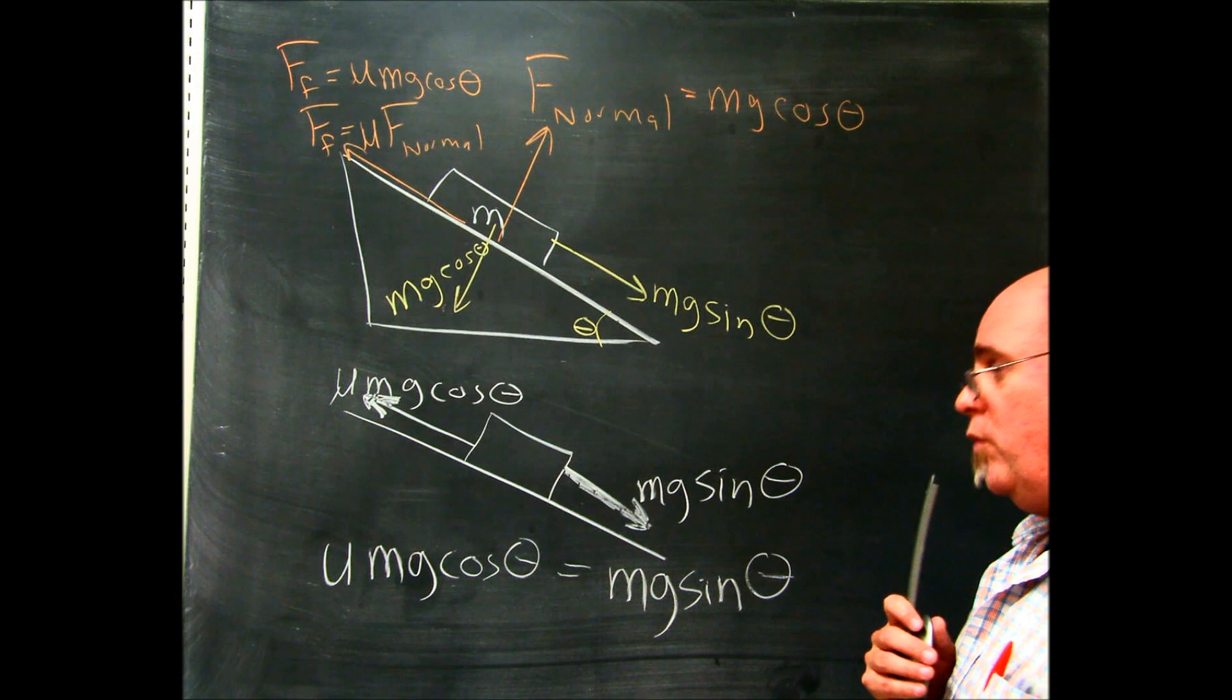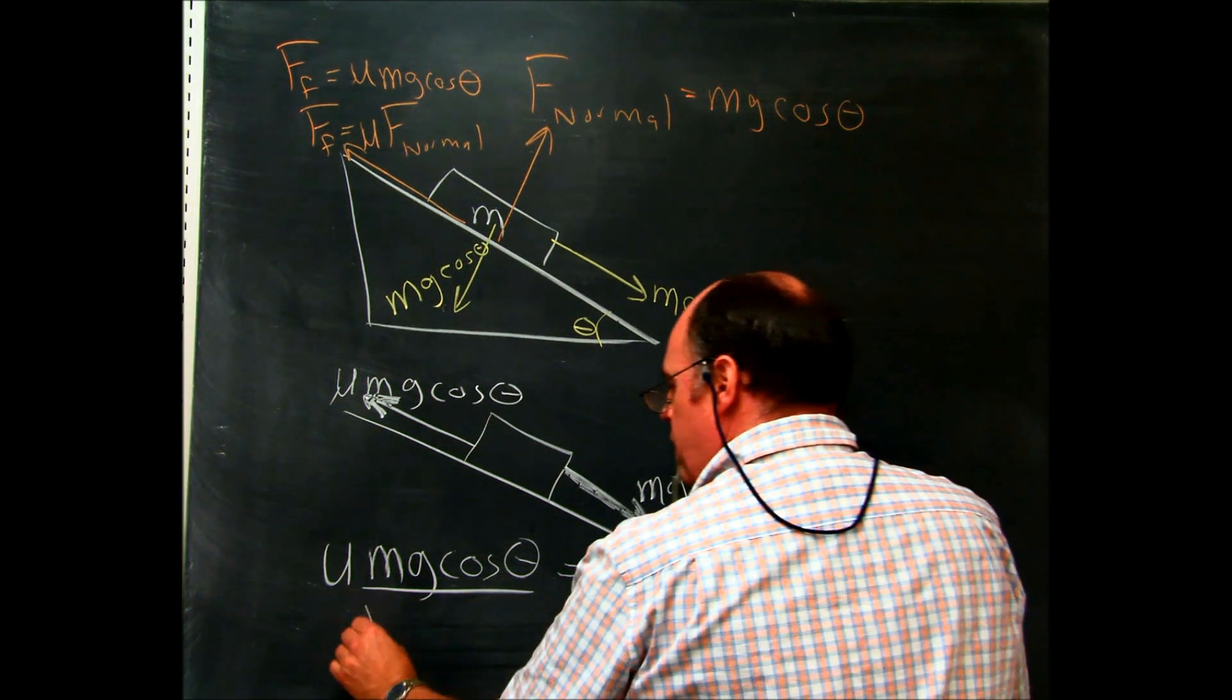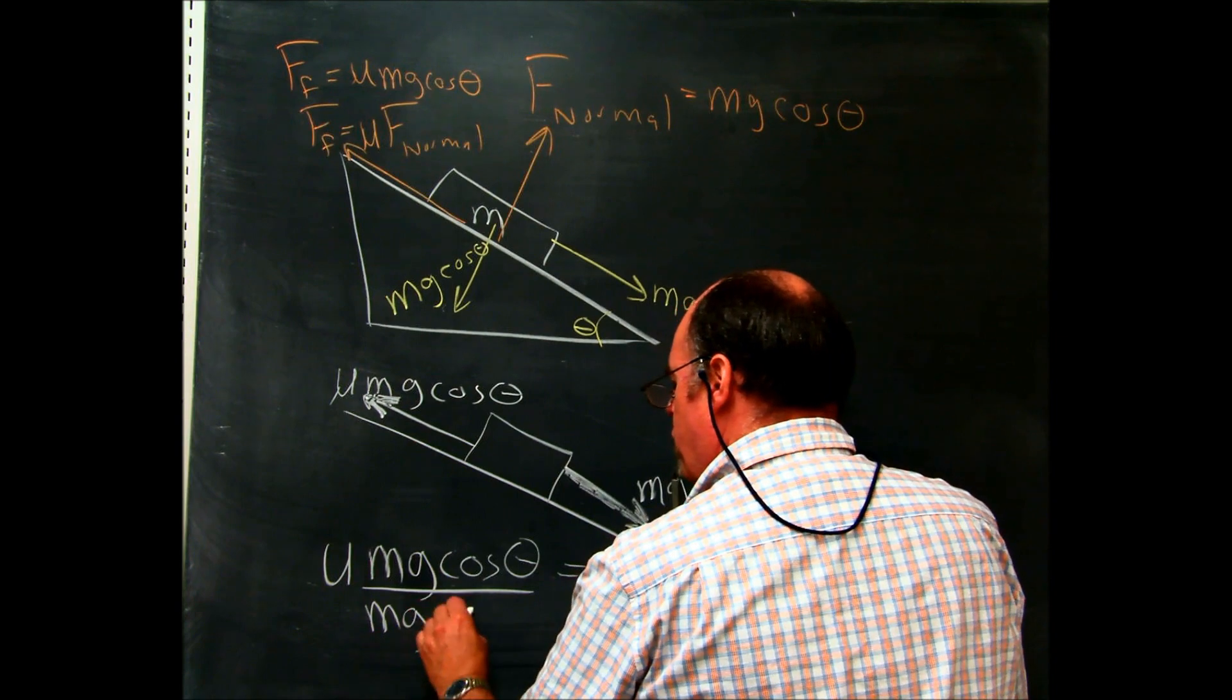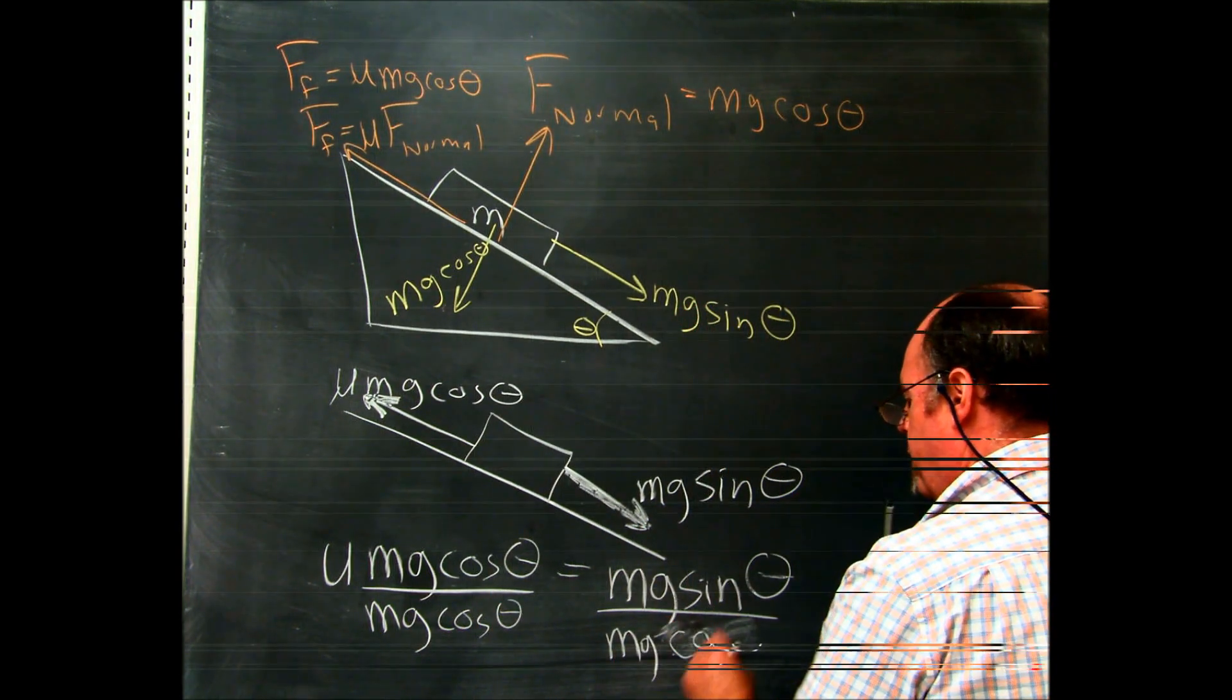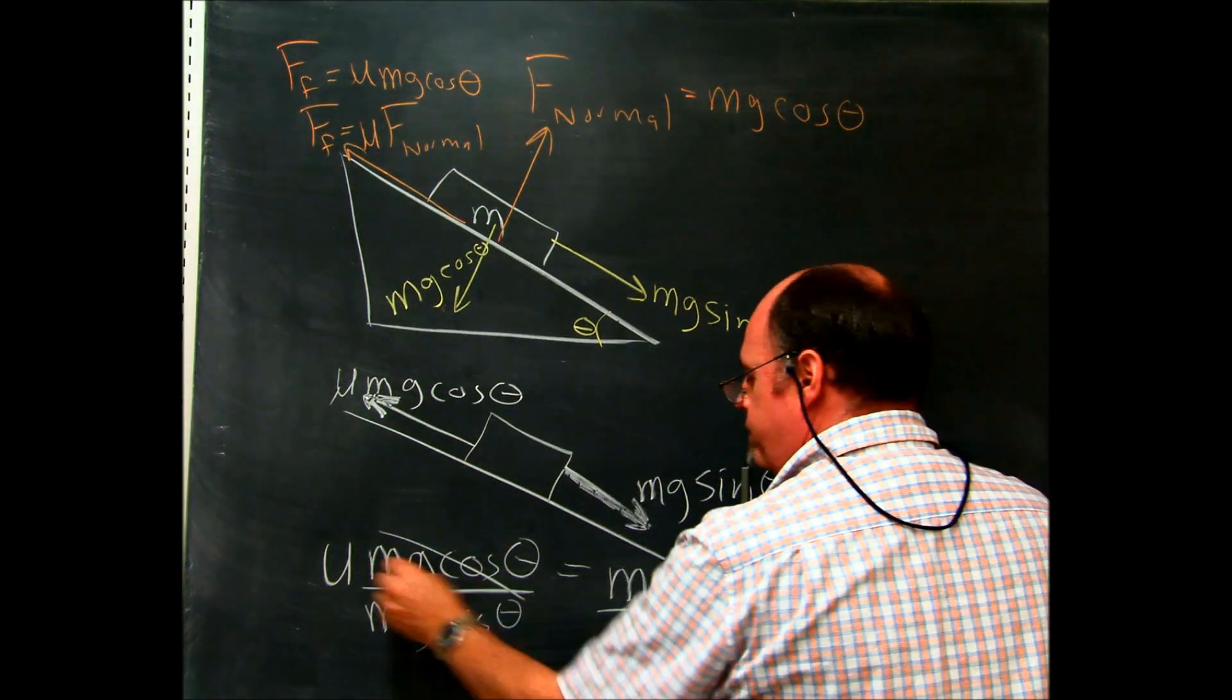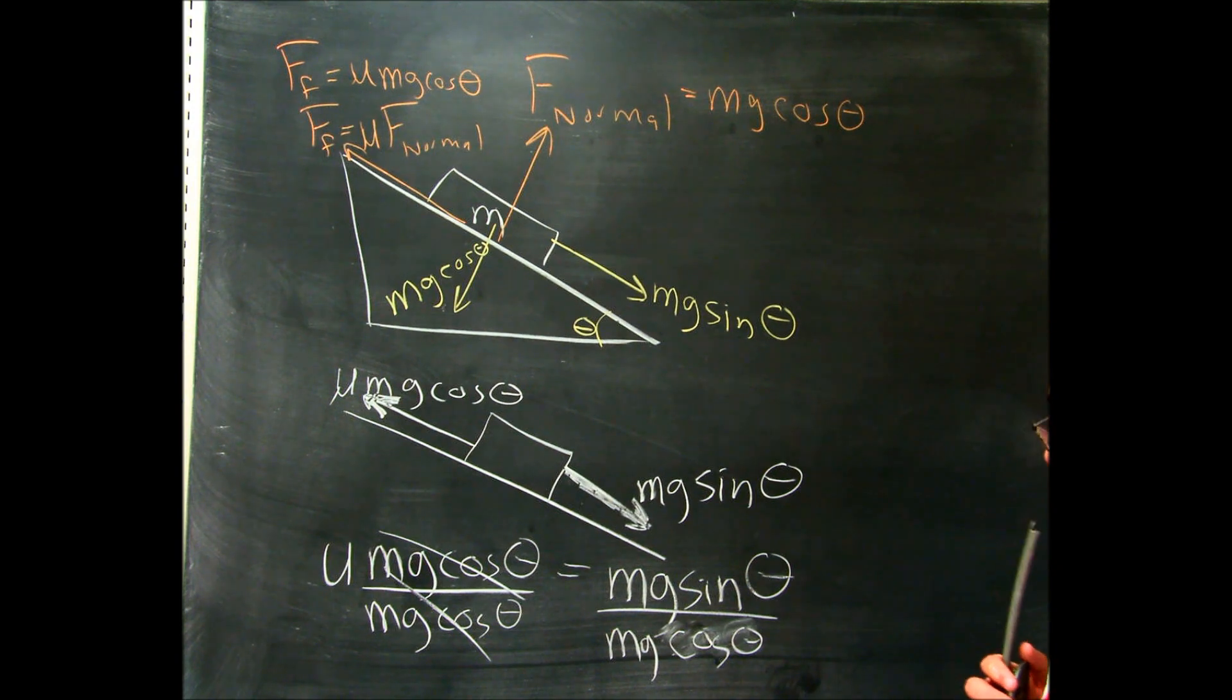And if we were to go, and we were to divide both sides by this, mg cosine of the angle, well, this goes out. So on the left side of the equation, you just have mu by itself.